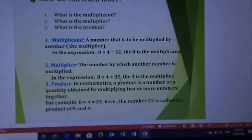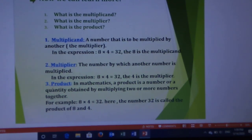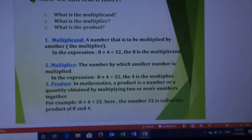Number three, Product: in mathematics, a product is a number or a quantity obtained by multiplying two or more numbers together. For example, 8 × 4 = 32, here the number 32 is called the product of 8 and 4.